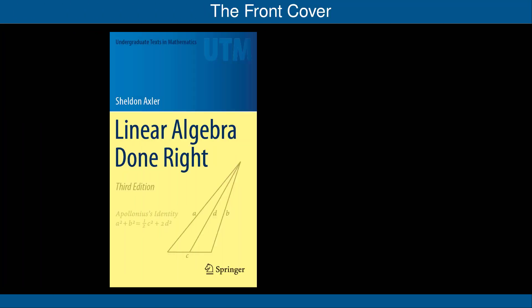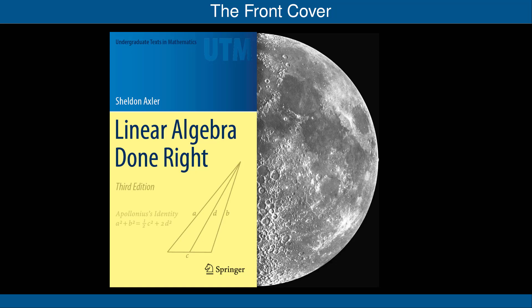I would like to explain the front cover of the book, which is shown here. It features Apollonius' identity. Apollonius was a Greek mathematician who was born around 262 BC. To honor Apollonius, a crater on the moon has been named after him. The front cover shows an arbitrary triangle with sides of length a, b, and c. Let d be the length of the line segment from the midpoint of the side of length c to the opposite vertex, as shown in the figure.